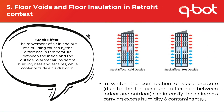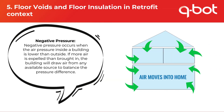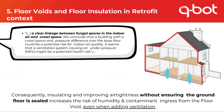This is due to a combination of the stack effect and negative pressure. Stack effect is the movement of air in and out of a building caused by the temperature difference between inside and outside — warmer air inside rises and escapes, whilst cooler air outside is drawn in. Negative pressure occurs when the air pressure inside a building is lower than outside. If more air is expelled than brought in, the building will draw air from any available source, most notably from the void. As a result, insulating and improving air tightness without sealing the ground floor increases the risk of humidity and contaminant ingress from the floor void, even when adding ventilation.